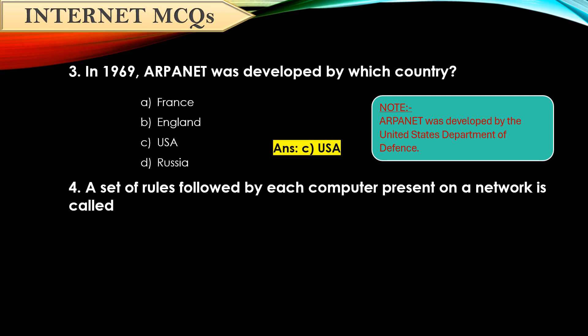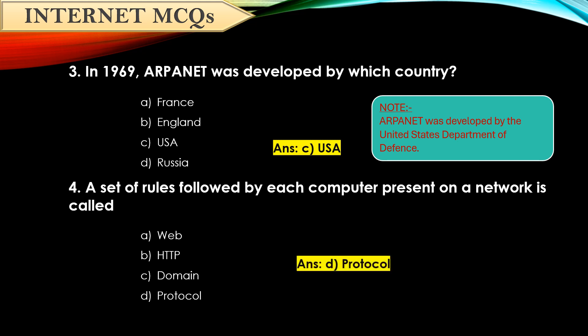Question number four: A set of rules followed by each computer present on a network is called — the answer is Option D: PROTOCOL.